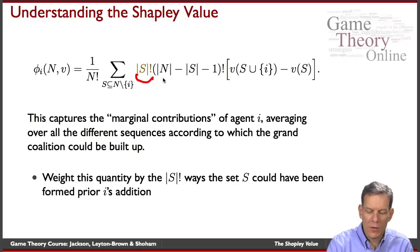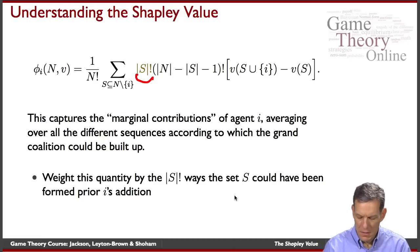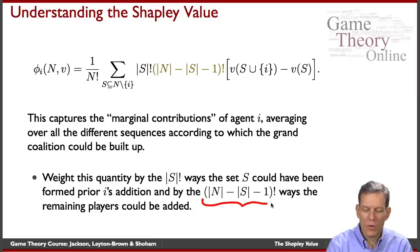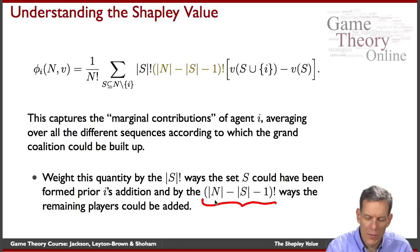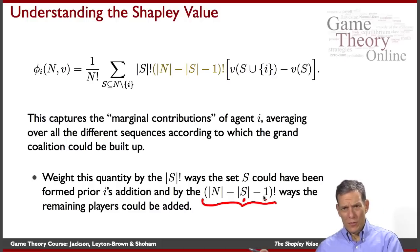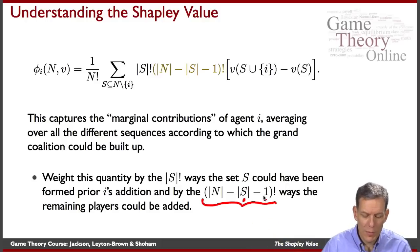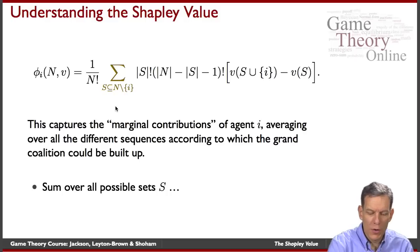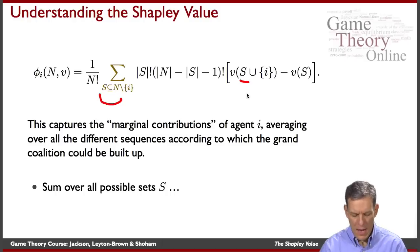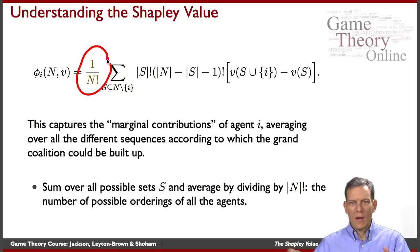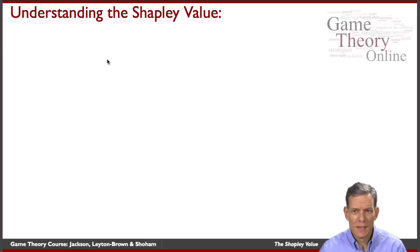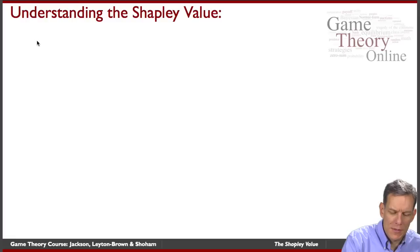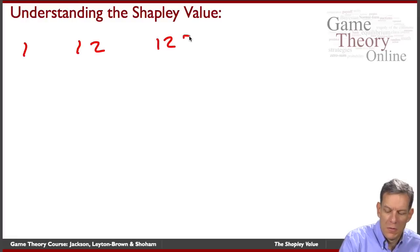What we're doing is looking at these different sequences: first calculating, as we go along the sequence, what did i add when they were added. Next we weight this by the different possible ways we could have built up the coalitions before i was added. We also weight by the different orders in which we could add the individuals not yet added after i has been added — that's (n minus |S| minus 1)! giving the number of orderings for remaining people. Then we sum over all possible coalitions before i, and divide through by the total number of orderings n!.